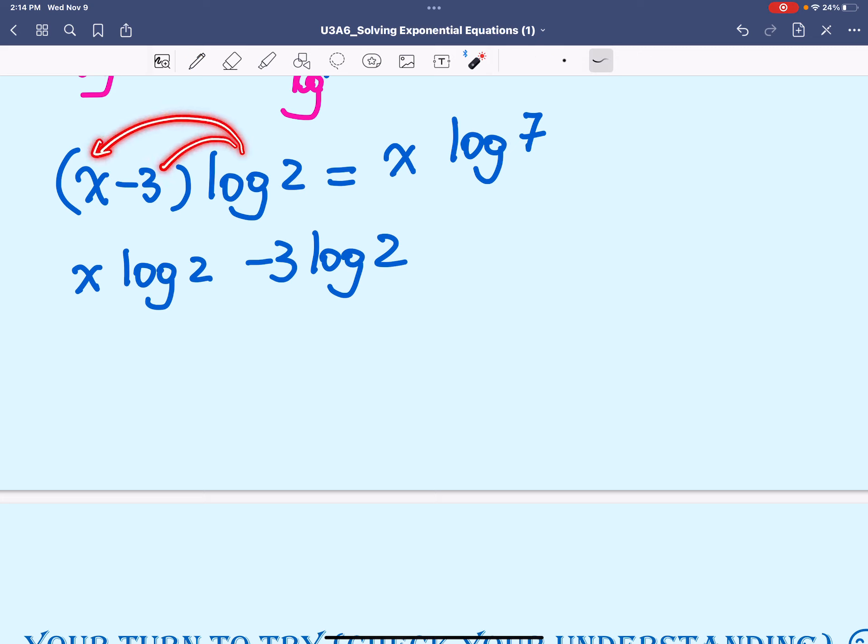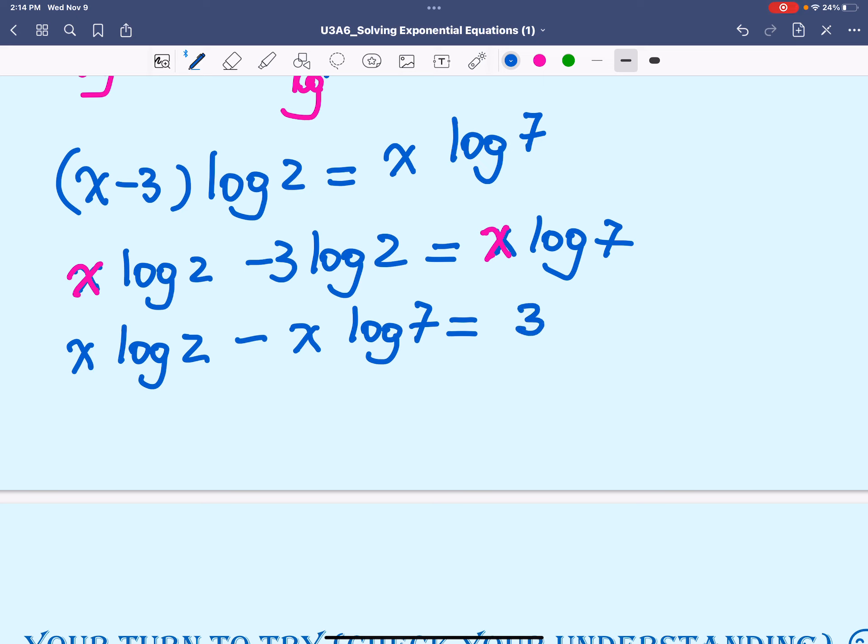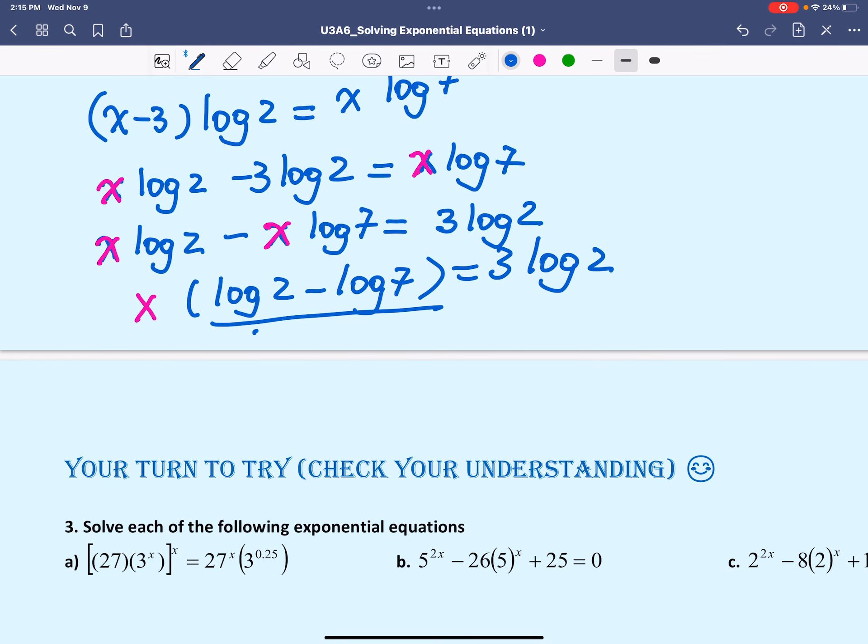That will bring us to x minus 3 becoming now a coefficient, log 2 equals x becoming a coefficient, log 7. Expand so that we can bring x out. x log 2 minus 3 log 2 equals x log 7. x is a variable in both terms. We're going to bring those terms that contain x to one side of the equation, and we'll take 3 log 2 on the other side. So it becomes positive 3 log 2. Factor x out. We have log 2 minus log 7 equals 3 log 2. Divide both sides by the coefficient log 2 minus log 7.